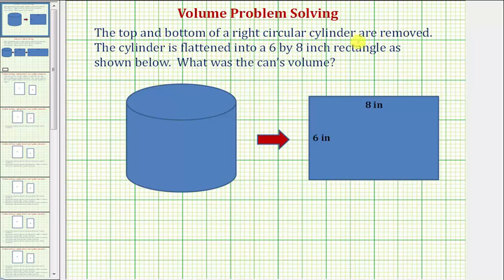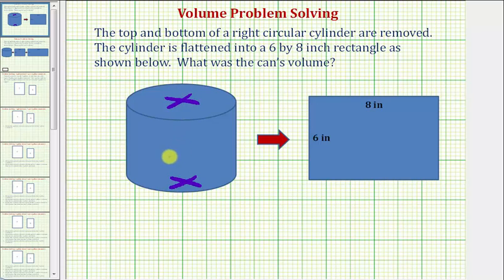The top and bottom of a right circular cylinder are removed. So if this is the right circular cylinder, the top is removed and the bottom is removed. The cylinder is flattened into a six by eight inch rectangle as shown below. If we remove the top and bottom and flatten this right circular cylinder, we get this six inch by eight inch rectangle.